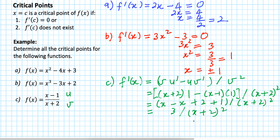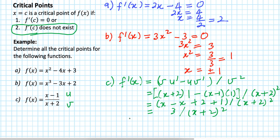For a rational function like this, you cannot find any value of x that satisfies f'(x) equal to 0. But you know that the domain requires the denominator cannot be 0. If the denominator becomes 0, f prime does not exist. So now we use the second condition: if f'(c) does not exist, then x equal to c is a critical point. This function does not exist when x plus 2 is equal to 0, so x is equal to minus 2.